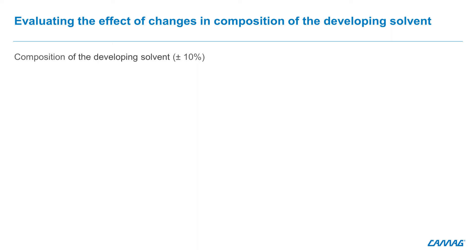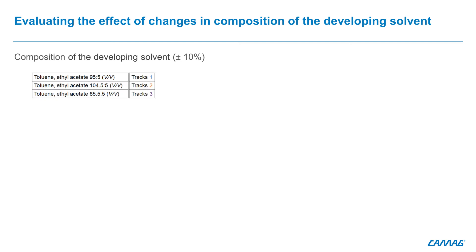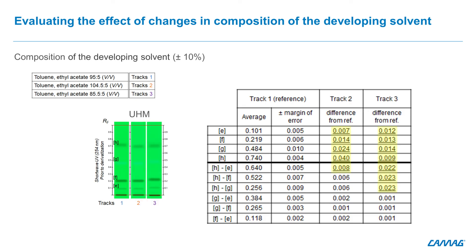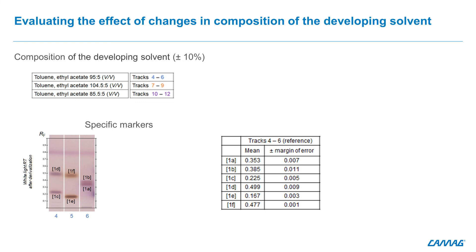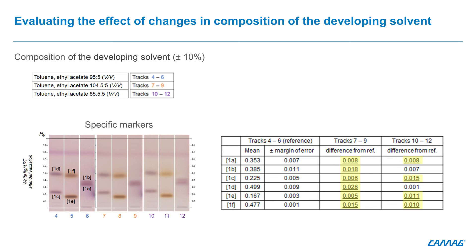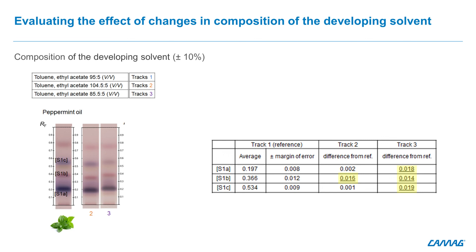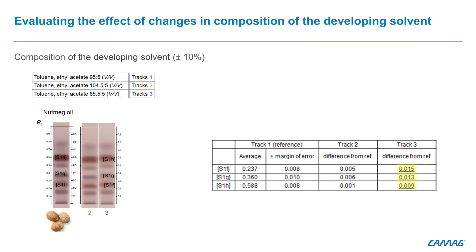The variation of ±10% in the composition of the developing solvent brings measurable change to the position of the components of the UHM. When looking at the UHM with the developing solvent toluene/ethyl acetate, the results show that by adding more toluene or more ethyl acetate, the components of the UHM can detect all the changes. Concerning the current SST and specific markers, when a variation of ±10% in the composition of the developing solvent is tested, the same observation as for the UHM is made. When looking at zones from the essential oil samples — peppermint oil, lavender oil and nutmeg oil — the data show the same observations: adding toluene or ethyl acetate will be detected in all cases.